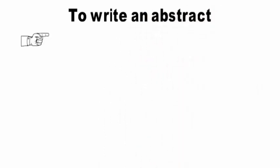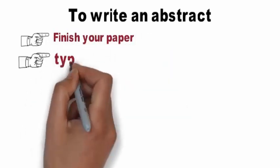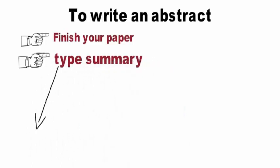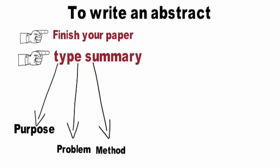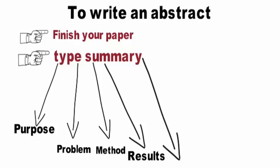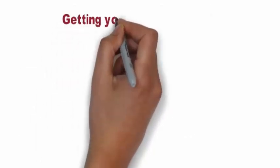It should help your reader understand the paper and help people searching for this paper decide whether it suits their purpose prior to reading. To write an abstract, finish your paper first, then type a summary that identifies the purpose, problem, method, results, and conclusion of your work. After you get the details down, format it correctly. Since an abstract is only a summary of the work you've already done, it's easy to accomplish.